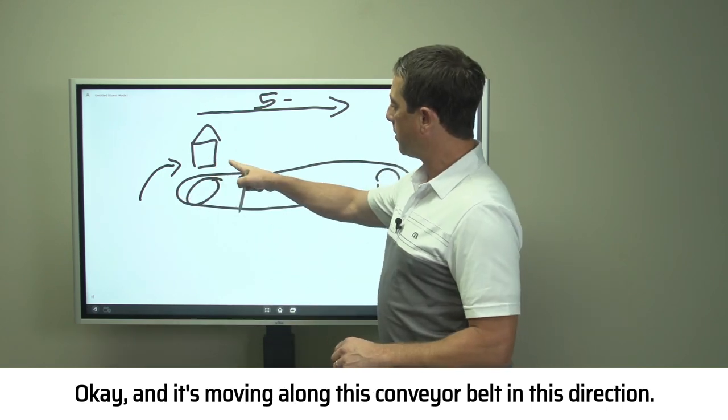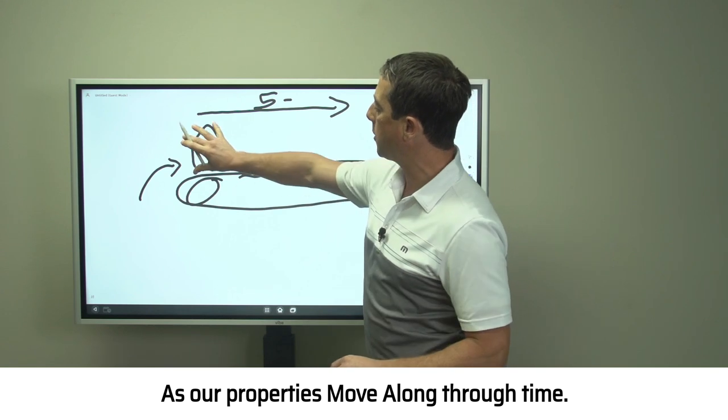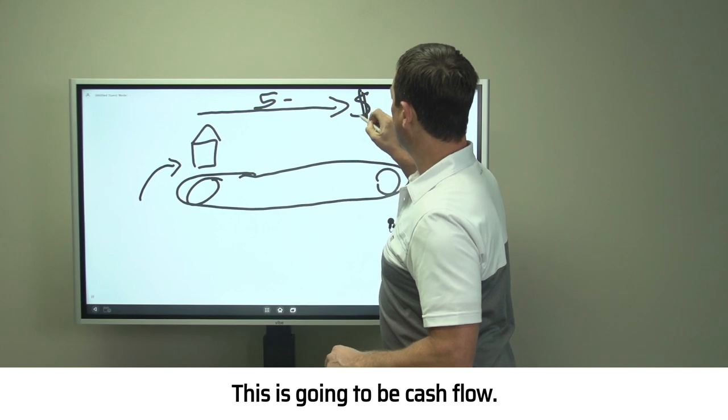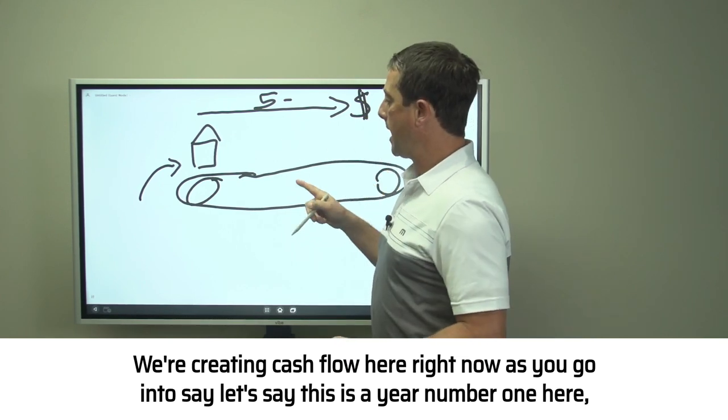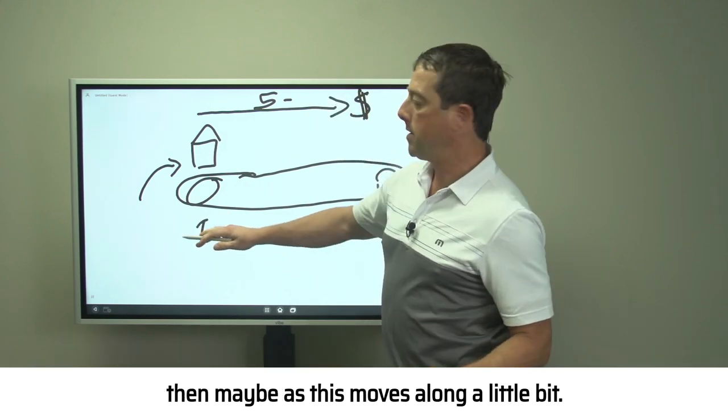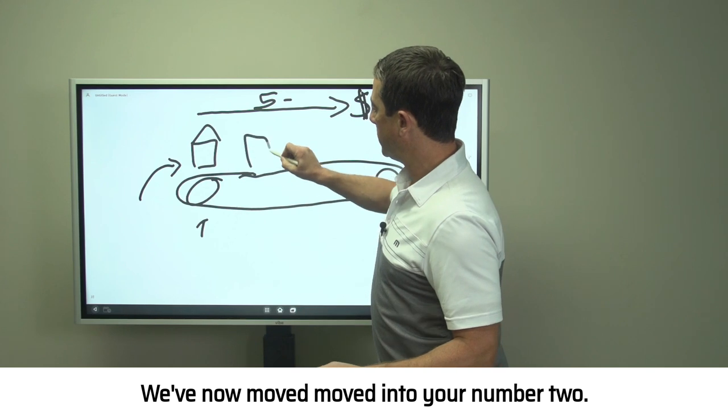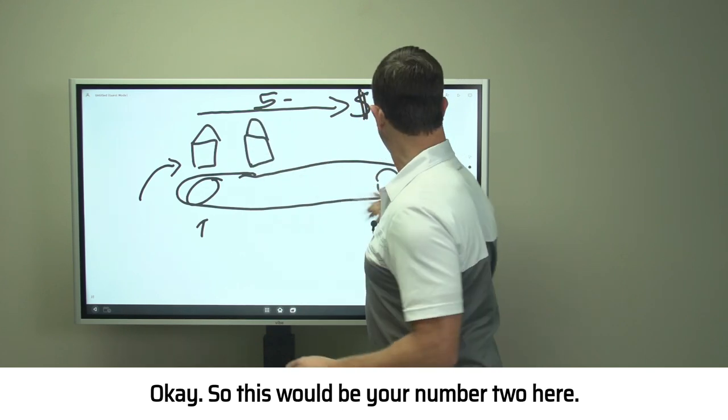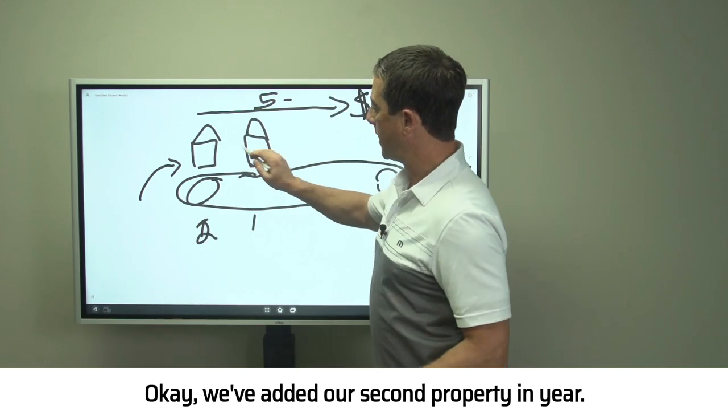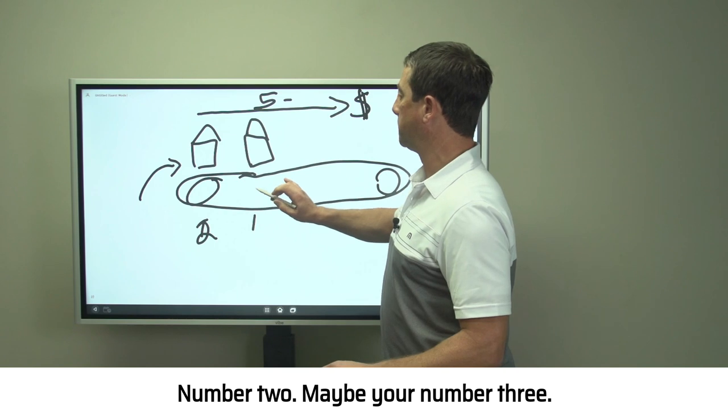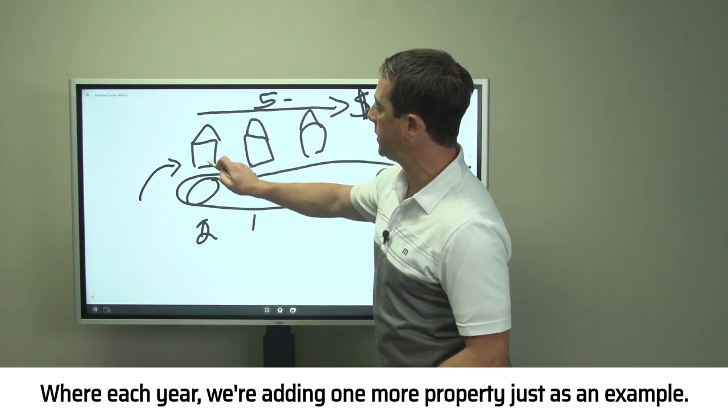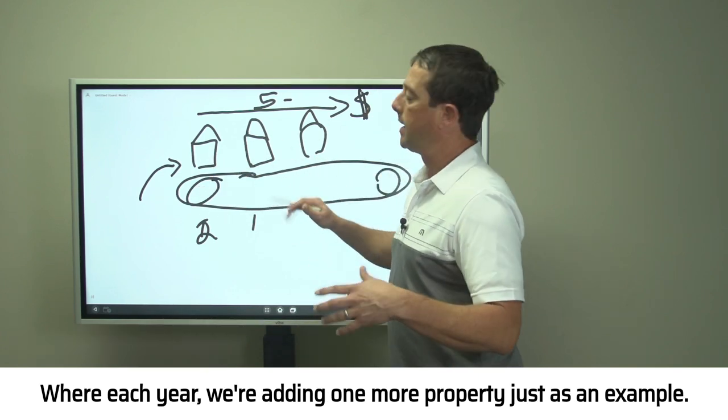It's moving along this conveyor belt in this direction. As our properties move along through time, this is going to be cash flow—we're creating cash flow here. As this moves along, we've moved into year number two, then year number three, year number four, year number five, where each year we're adding one more property as an example.